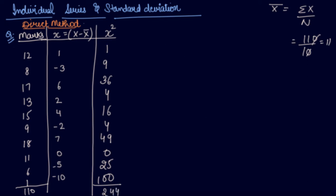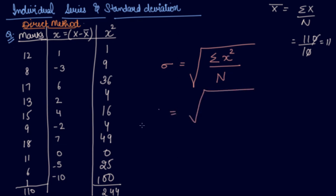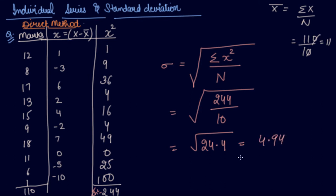The formula for standard deviation in the direct method is: SD = √(Σx²/n), which is the under root of the sum of squares of deviation taken from the mean divided by the number of observations. So we have √(244/10) = √24.4, giving an answer of 4.94.